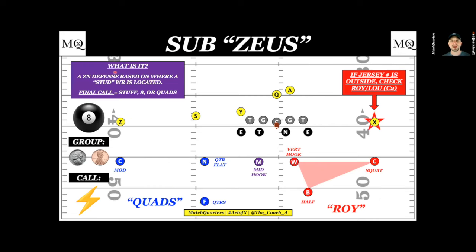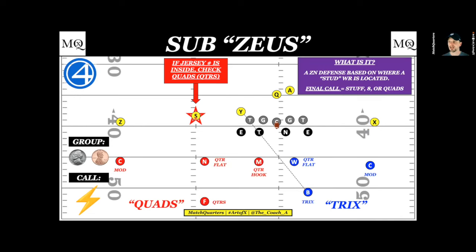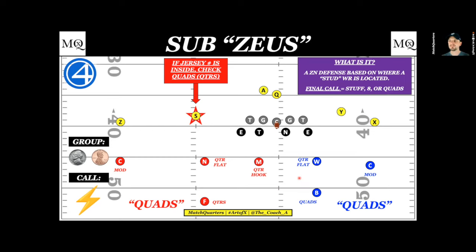Here we have a Roy call — rotating right — which is essentially a Stuff call, or what people normally call Cover Six. Running quarters to this side, we have quarter-flat, stacking number two and number one, running our quarters, with Cover Two to the other side. When we get the slot receiver in, we check to Quads: the nickel buzzes over to the quarter-flat on number two, a safety stacks on top, we solo the outside receivers, and a Trick safety can poach back inside if needed. This is how you create layers in the defense.